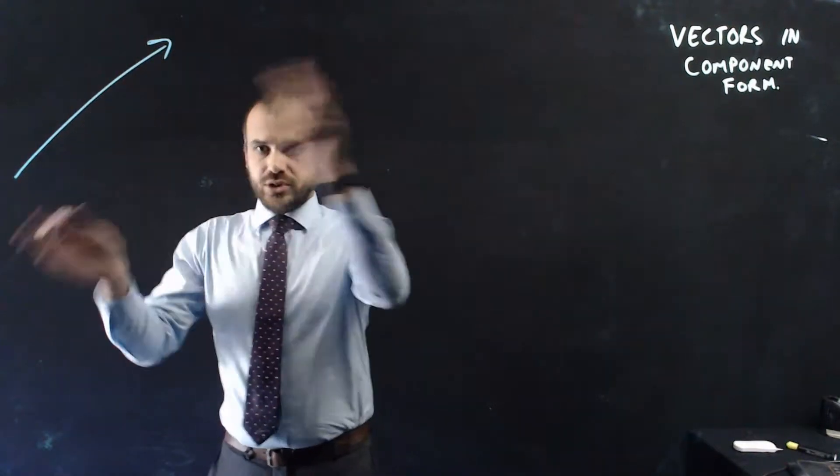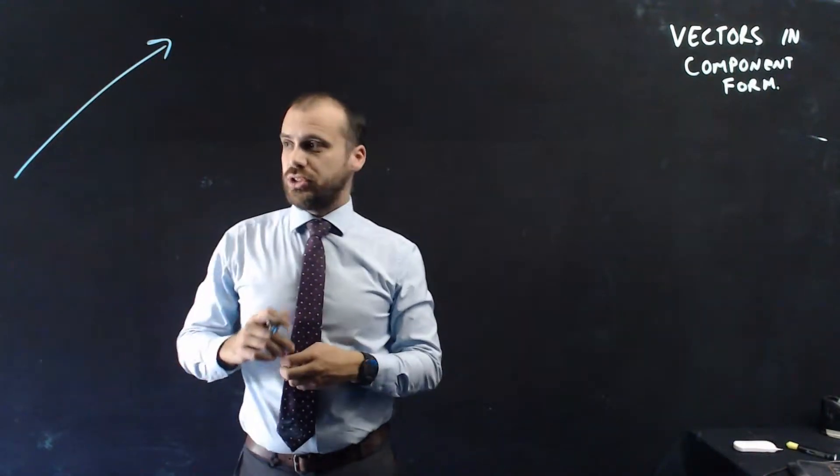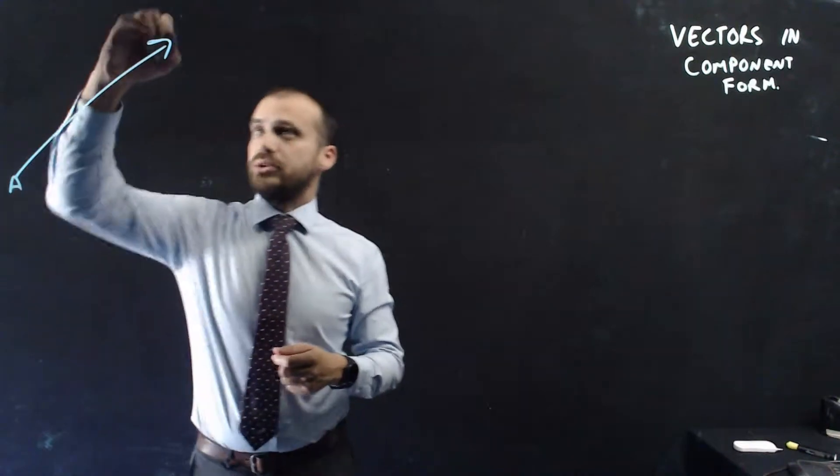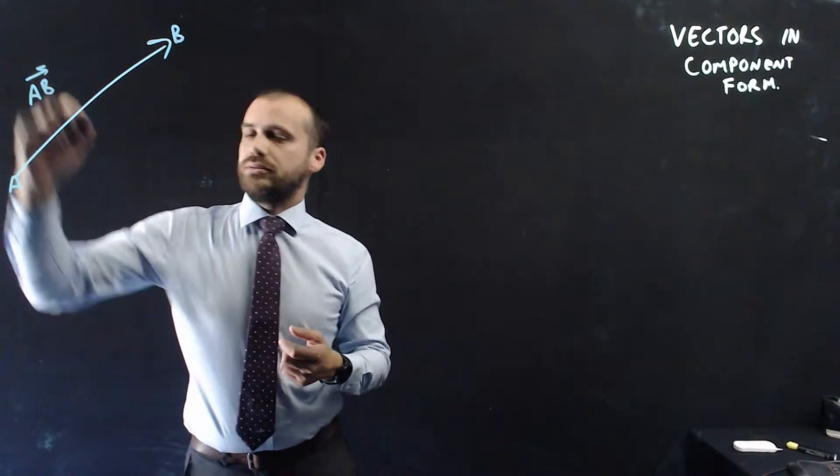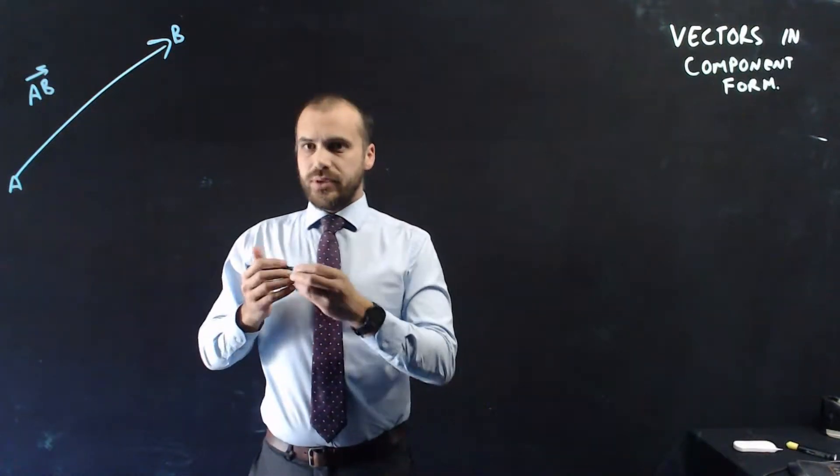Here's a vector, a straight line travelling in that direction. We'll call this A, and we'll call this B, which of course makes that vector AB. A little arrow above it.